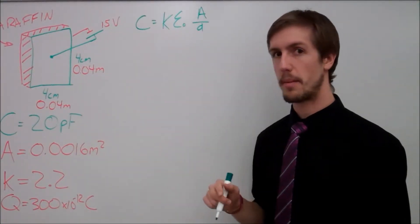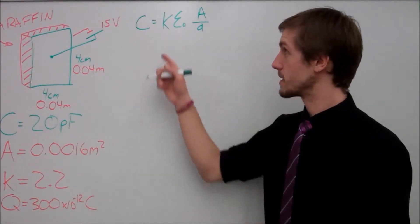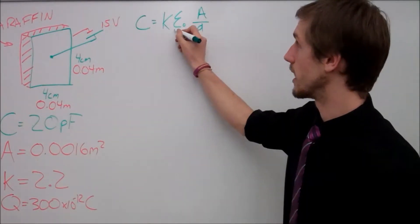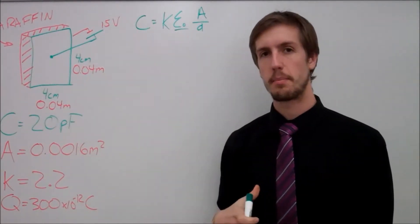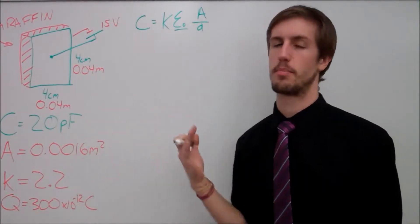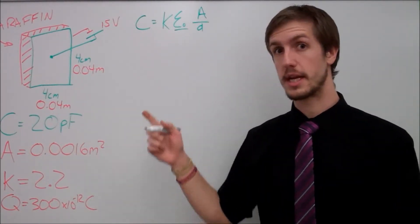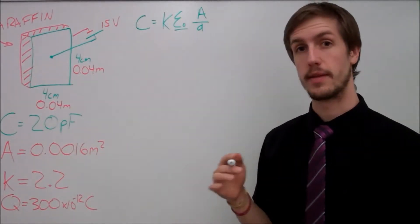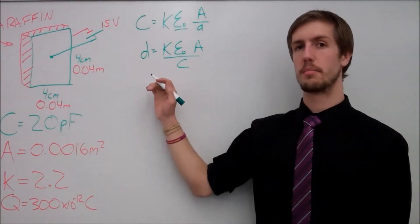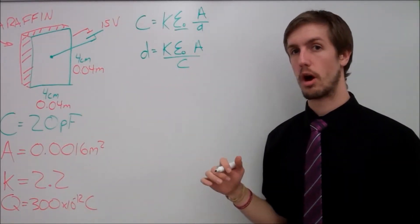We're going to use my capacitance, I'm going to multiply it by my K value, and then epsilon not, which is a constant, multiply that by the area over the distance apart our two plates are. So we're going to rearrange to get distance by itself, and we're going to get this, where now I have isolated the distance between our plates.